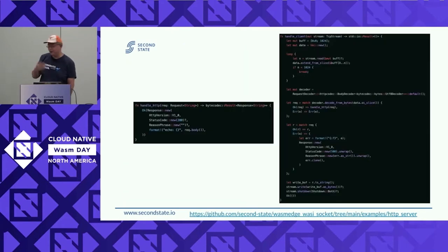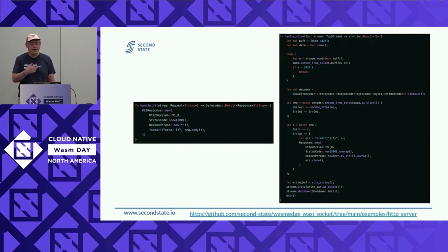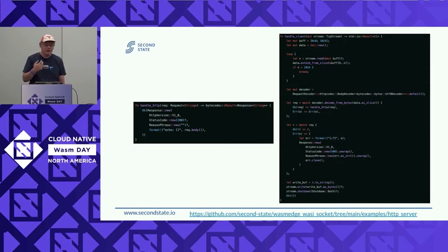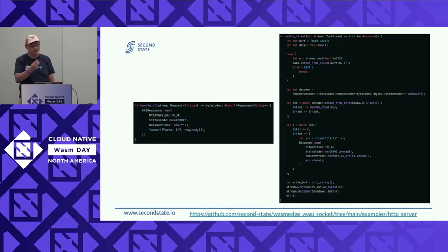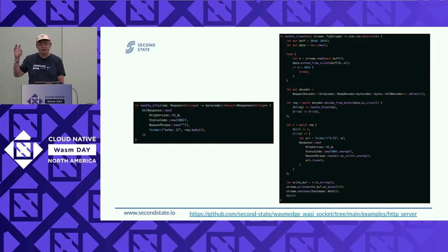The code is here — those screenshots are the entire application. The entire application only has this much code. If you look at the handleClient function, it gets the input HTTP, decodes it, parses out different elements, and then generates a response. This response basically just echoes back the body — so if the POST request has a body, it echoes it back from the command line. That's a very simple Rust-based HTTP server that runs inside WasmEdge.